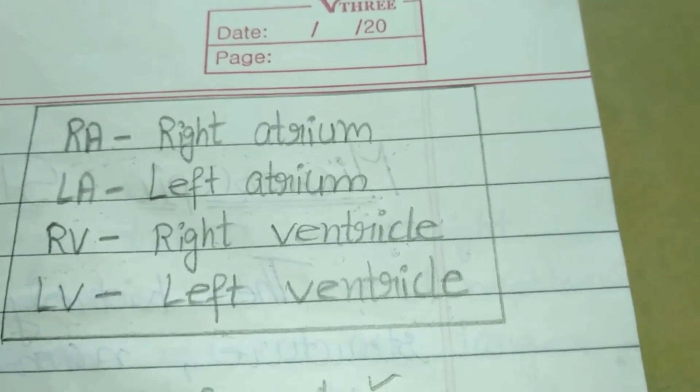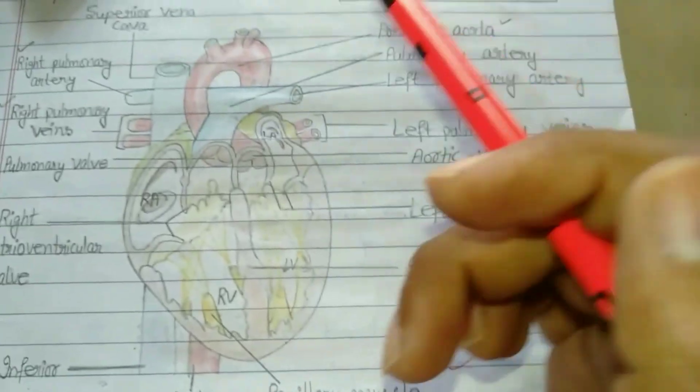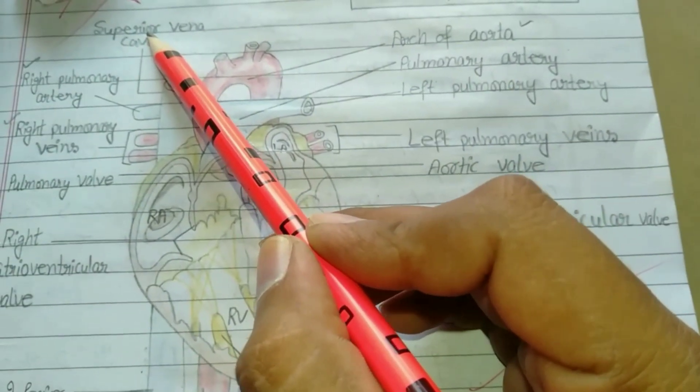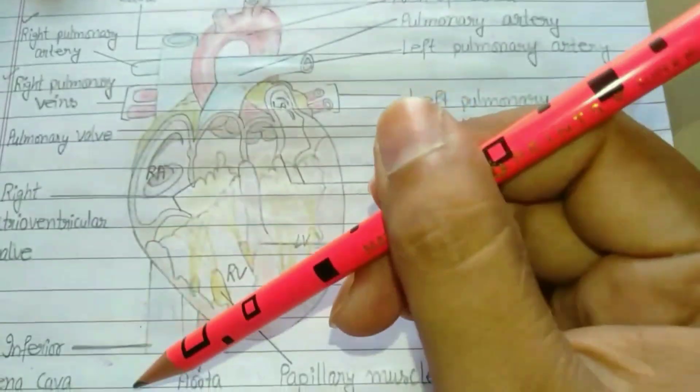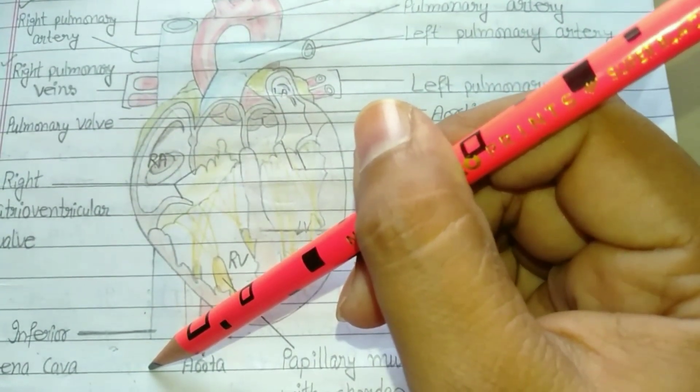As you can see, it is superior vena cava that carries deoxygenated blood from upper body parts, and it is inferior vena cava that carries deoxygenated blood from the lower body parts.